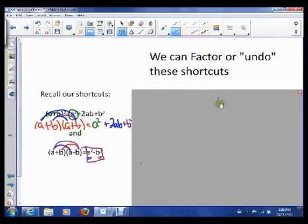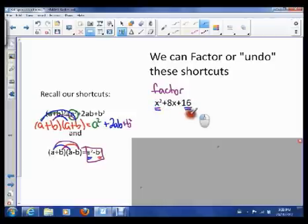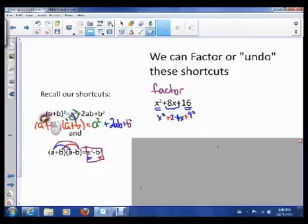So we can factor or undo these shortcuts. So for example, if we want to factor this expression, we could notice that this is just x squared. This is actually just 4 squared. So that's x squared and that's 4 squared. And this part here is 2 times 4 times x. So this actually follows our formula of our perfect square. So since that follows our formula...